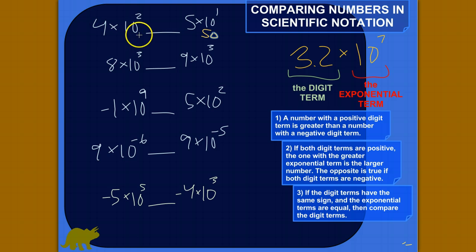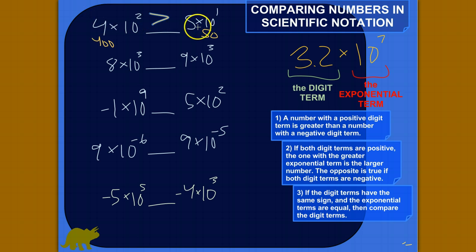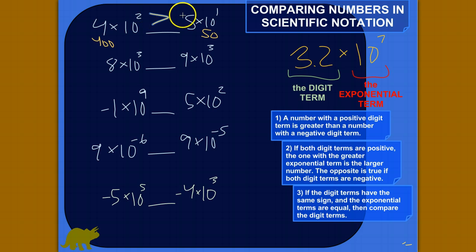Ten to the second means ten times ten, which equals 100. So 4 times 10 squared is 4 times 100, which is 400. You can convert both numbers and compare — 400 is greater than 50 — or you can follow the rules. Both digit terms are positive, so rule one doesn't apply. Moving to rule two: the one with the greater exponential term is larger. Ten squared is bigger than ten to the first, so 4 times 10 squared is greater than 5 times 10 to the first.